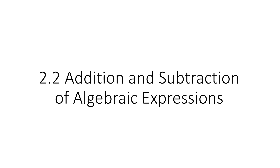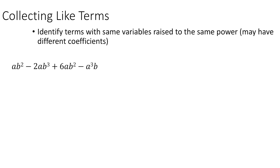Continuing on with the basics of algebra, we're going to look at the rules for addition and subtraction of algebraic expressions. The key idea here is that you're going to collect like terms — that's how you simplify addition and subtraction. You have to pay attention to the combination of variables in each term; they have to contain the exact same letters with the exact same powers. What's allowed to be different is the coefficient — the number or sign it may have.